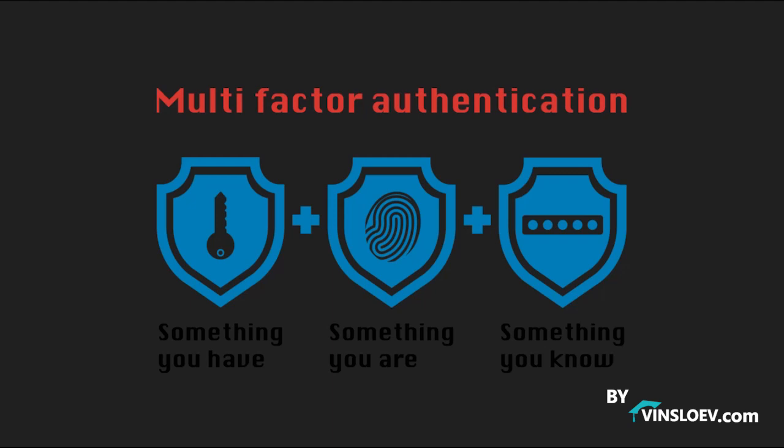Whenever you are using two of these factors you are using multi-factor authentication. For example, you can have something you know — your username and password — and then you need something else, like something you have, such as your mobile phone. The service will send a code to your phone number and you will need that code alongside your password and username. Or, when entering a building, it could be something you know — a password — and something you are — your fingerprint — in order to get access.